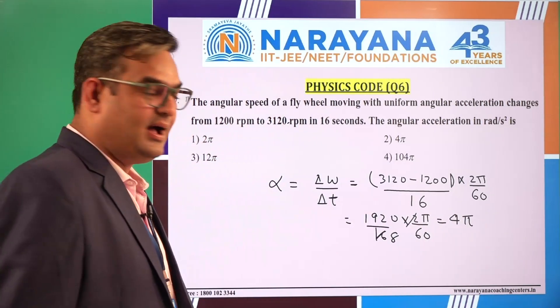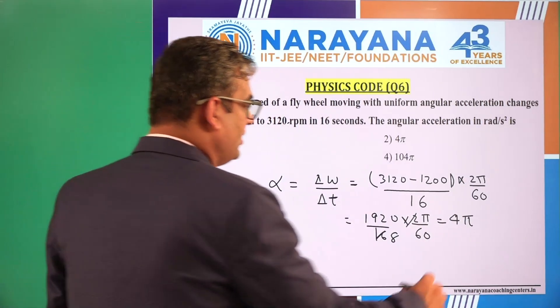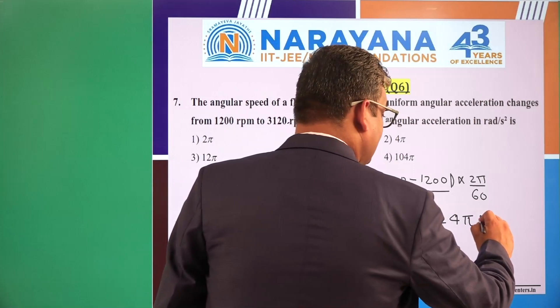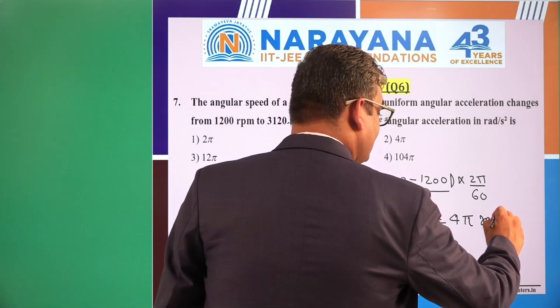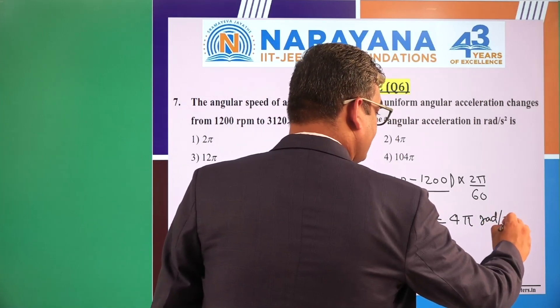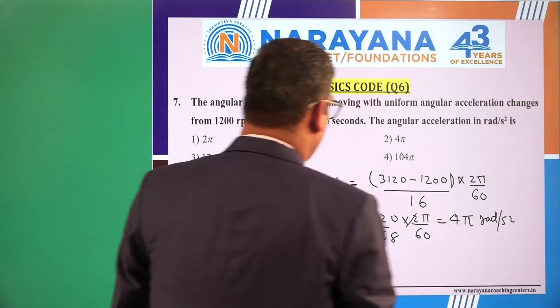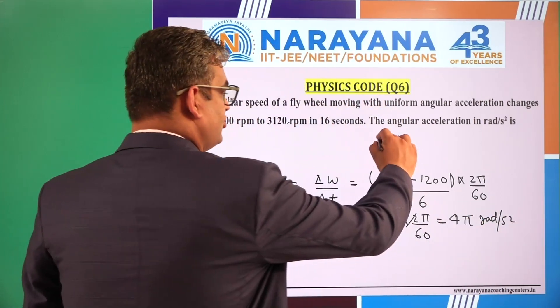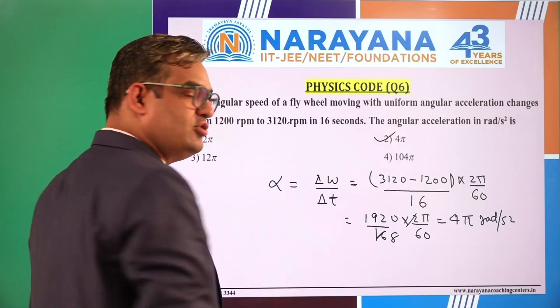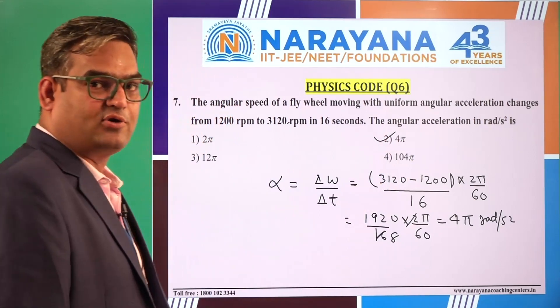This gives us 4π, which is the answer in radians per second squared. So the second option should be the correct option.